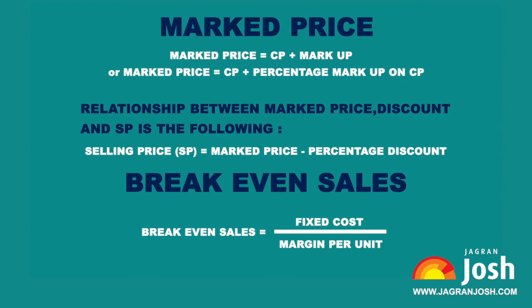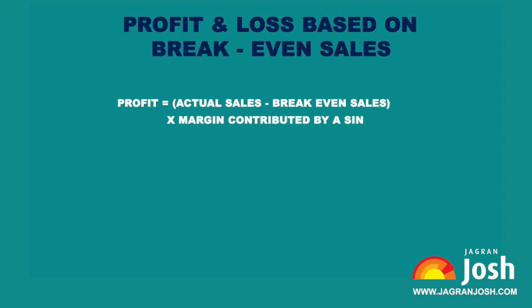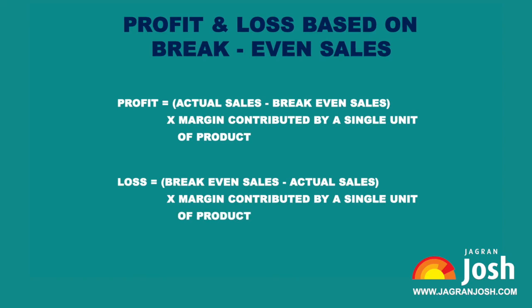Formula for break-even sales: Break-Even Sales = Fixed Cost / Margin per Unit. Profit and loss based on break-even sales: Profit = (Actual Sales − Break-Even Sales) × Margin contributed by a single unit of product. Loss = (Break-Even Sales − Actual Sales) × Margin contributed by a single unit of product.